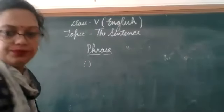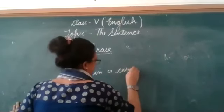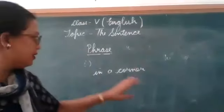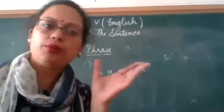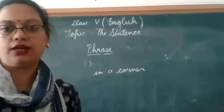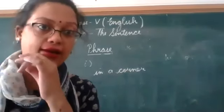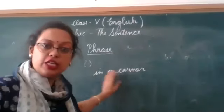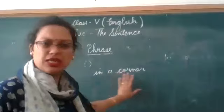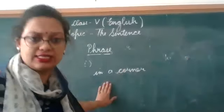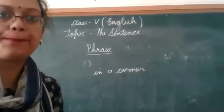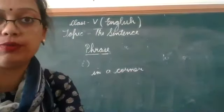If I say 'in a corner' — it is a group of words, right? In a corner means there is something in a corner, but it doesn't tell us the whole meaning. We don't understand the complete meaning. So this is a phrase — these words are conveying some meaning but it is not a complete meaning. Is there any verb in 'in a corner'? No, there is no verb here.